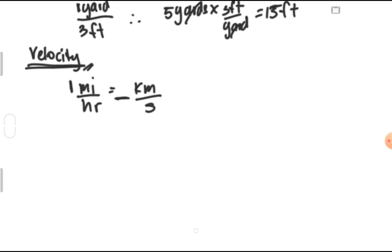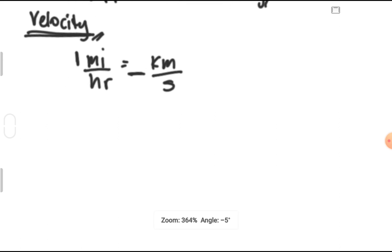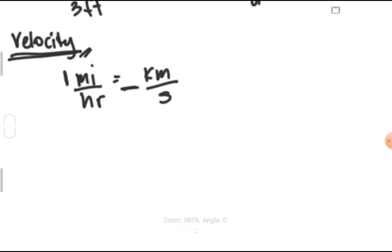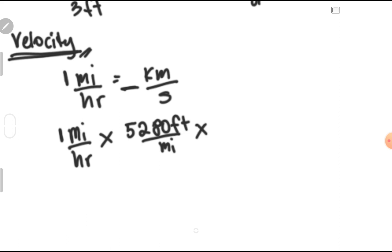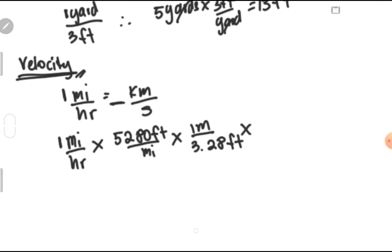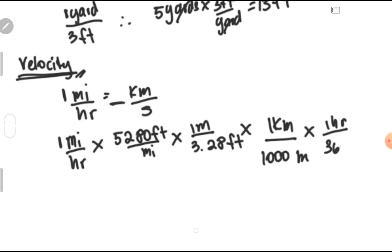So 1 mile per hour equals how many kilometers per second? We multiply 1 mile per hour by 5,280 feet per mile, then by 1 meter per 3.28 feet, then by 1 kilometer per 1,000 meters, and also by 1 hour per 3,600 seconds. You can use another method as long as you arrive at kilometers per second.